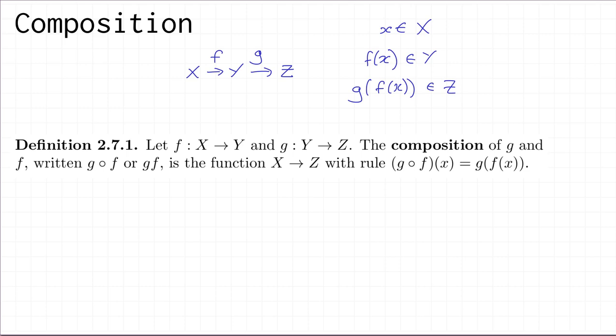So we've started with an element of X and ended up with an element of Z, which means we've defined a new function whose domain is X and whose codomain is Z. That function is called the composition of g and f. Here's the definition: we take a function f from X to Y and a function g from Y to Z. The important part is that the domain of g must equal the codomain of f. In that case, the composition of g and f — written with a little circle, or sometimes just as gf — is the function whose domain is X, whose codomain is Z, and whose rule is: (g∘f)(x) = g(f(x)).